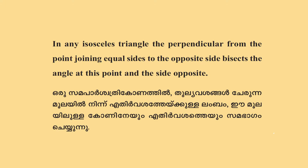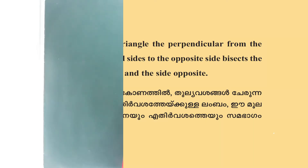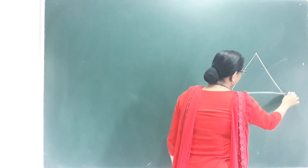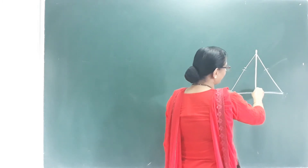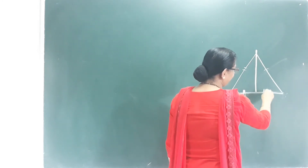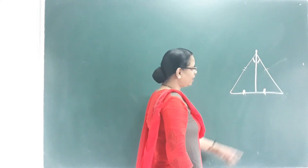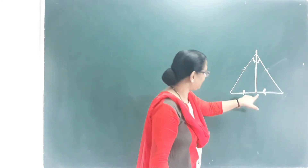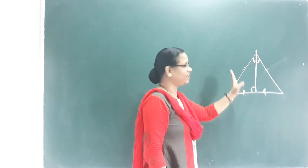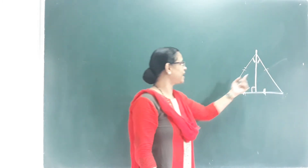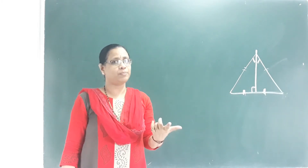Page number 27 is the theorem point. In any isosceles triangle, the perpendicular from the point joining the equal sides to the opposite side bisects the angle at this point and the side opposite. The two sides meet and intersect at this point. When we are perpendicular to the joint, the side is bisected and the angle is bisected. Perpendicular bisectors are 90 degrees. Perpendicular bisectors are the angle bisectors — that is the isosceles triangle. Perpendicular bisectors and angle bisectors are the same.